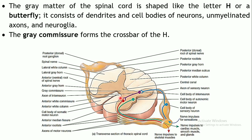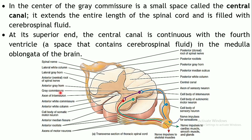The grey matter is shaped like the letter H, or like a butterfly. It generally comprises cell bodies and dendrites of neurons, unmyelinated axons, and neuroglia — giving it a greyish appearance due to the Nissl bodies. The crossbar of the H is known as the grey commissure. At the center of the grey commissure is the central canal — a small space extending throughout the spinal cord filled with cerebrospinal fluid, in continuation with the fourth ventricle of the brain in the medulla oblongata.